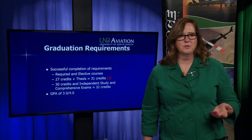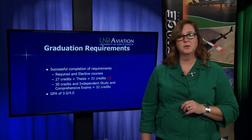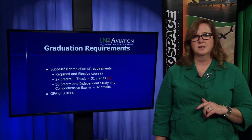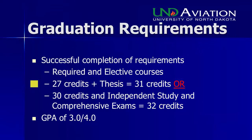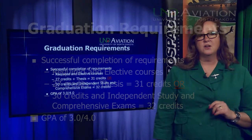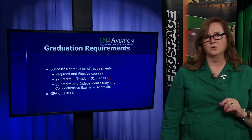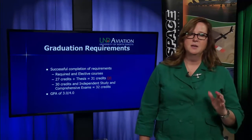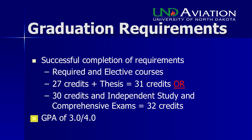To graduate, you must successfully complete all required and elective courses. If you pursue a thesis, you'll take 27 credits — nine courses — plus a four-credit thesis class. If you choose independent study, you'll do 30 credits plus the two-credit independent study and comprehensive exams, for a total of 32 credits. You must also maintain a 3.0 out of 4.0 GPA; falling below that at UND means dismissal from graduate school.